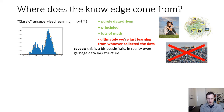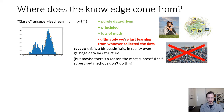I should clarify this with a caveat — this is a little pessimistic because even garbage data has structure, and in principle a non-supervised learning method could figure out that structure. But perhaps there's a reason the most successful self-supervised methods actually don't do this. While we've seen tremendous advances in unsupervised learning and generative modeling, these are not the methods learning the most useful representations. Current generative models trained on huge datasets are very good at generation — they're just not necessarily great at representation learning.